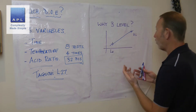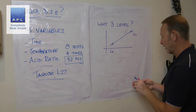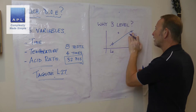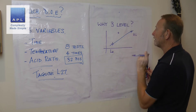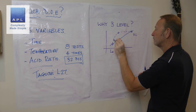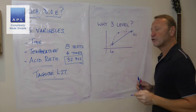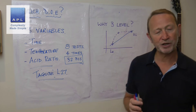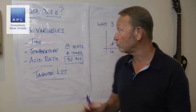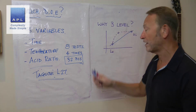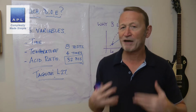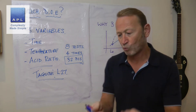Why would you test three-level? Well, what you're scared of is that the relationship is not a straight line — that the relationship is curved. That's why you pick three-level. But I'm still going to say: pick two-level. Here's why.